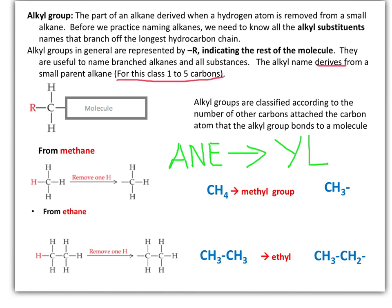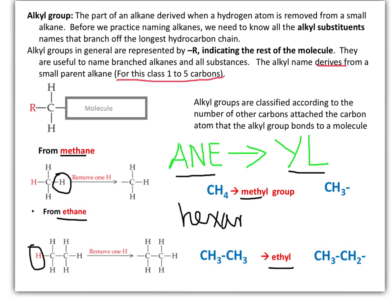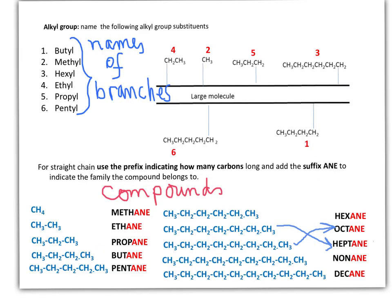The simplest branches or alkyl groups are formed by removing a hydrogen from a primary carbon on a parent straight-chain alkane and replacing the -ane ending with -yl. For example, methane becomes methyl when we remove one hydrogen. Ethane becomes ethyl by removing one hydrogen. If we have hexane, the alkyl group becomes hexyl. It is very important to remember that these are alkyl groups — part of a larger molecule.